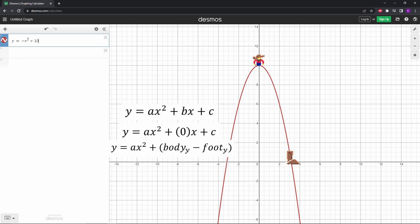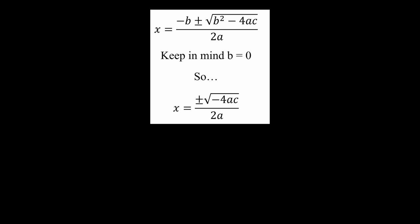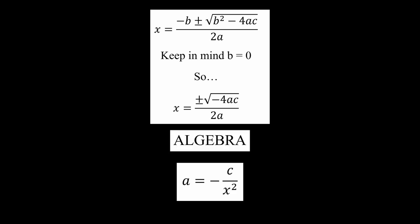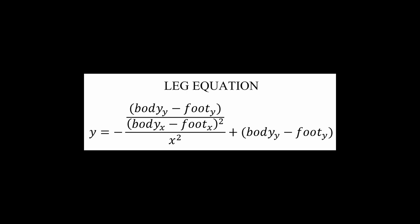Now, all we have to solve for in the equation is a, and we can do that with the quadratic formula. You might have had a song to help you remember this, but if you didn't, this was mine. In quadratics, x equals negative b plus or minus the square root of the quantity of b squared minus 4ac all over 2a. It's okay, I'm uncomfortable too. Comment down below if you hate math. With this equation, we can rearrange it using algebra and solve for a. Then we have our leg equation defined for any body and foot position.